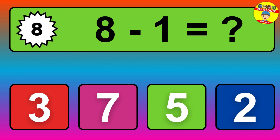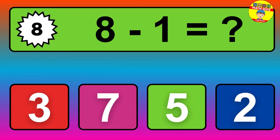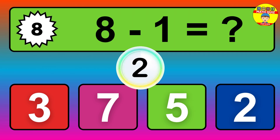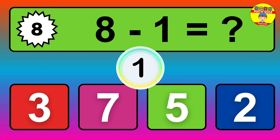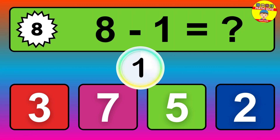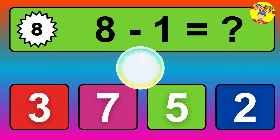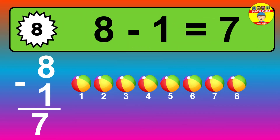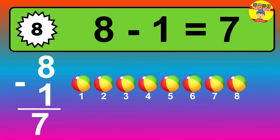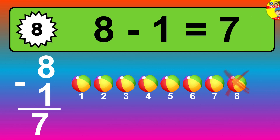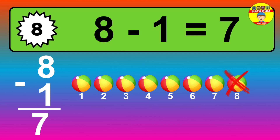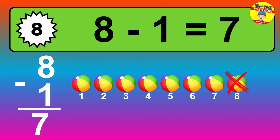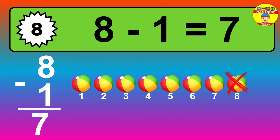Question eight: eight minus one equals what? So the answer is eight minus one is seven. Let's count it: one, two, three, four, five, six, seven.